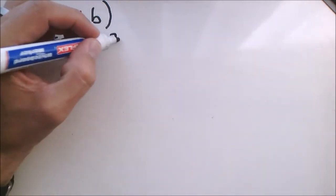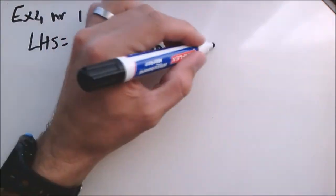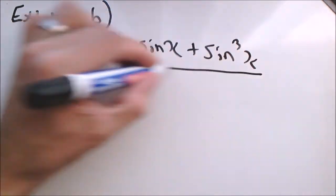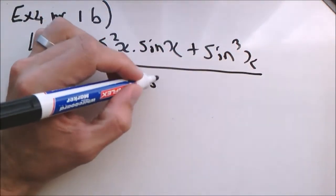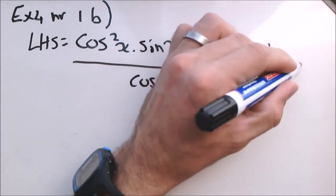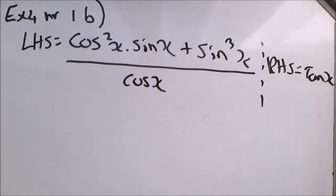First of all I ask you to prove the identities. And then it gives you these identities. Cos squared x, sine x, plus sin cubed x. So left hand side divided by cos x. And the right hand side is equal to tan x. If you look at the right hand side, we can clearly see it's a tan x. And tan x is undefined at 90 and 270.